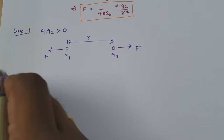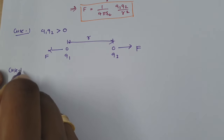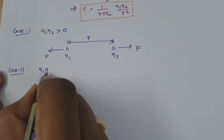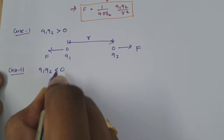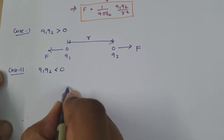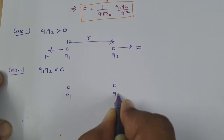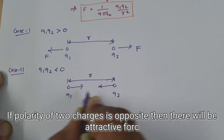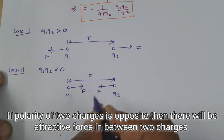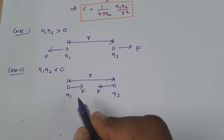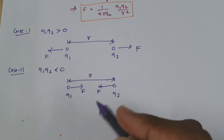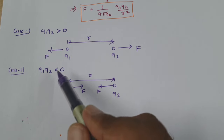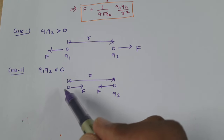In the second case, if both charges are having unlike polarity — like one charge is positive and the second charge is negative — then Q1 × Q2 will be less than zero. In this case there will be attractive force. These two charges Q1 and Q2 are separated by distance R, so there will be an attractive force between them. The force acting on both charges will be the same in magnitude. If charges have like polarity there is repulsive force; if charges have unlike polarity there is attractive force.